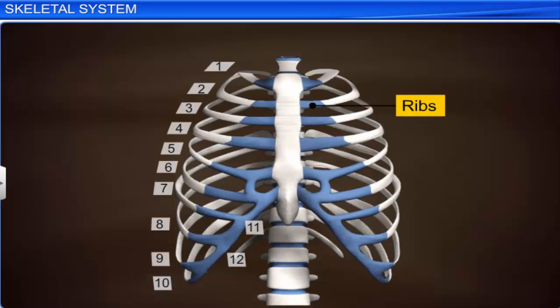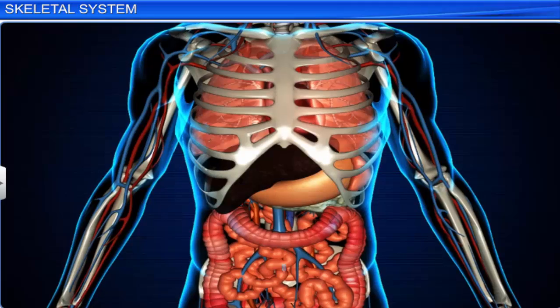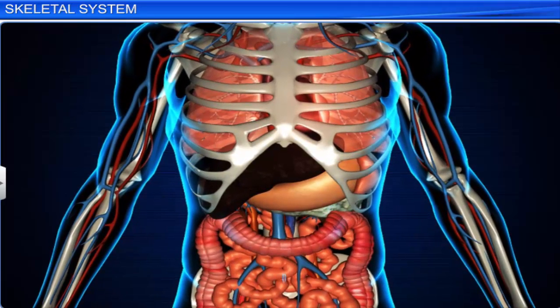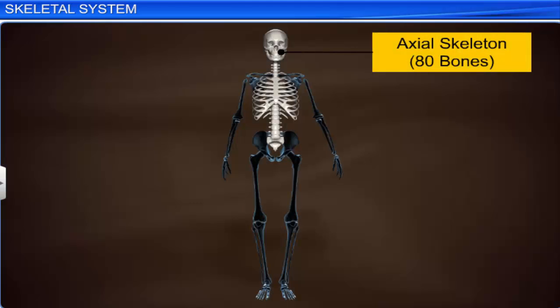The ribs, along with the thoracic vertebrae and sternum, form the rib cage, which protects vital organs like the heart and lungs. Thus, the axial skeleton consists of 80 bones, including the skull, vertebral column, ribs, and sternum.